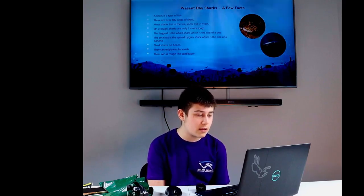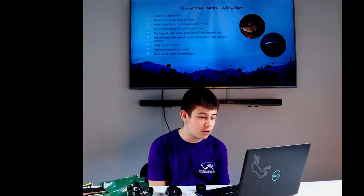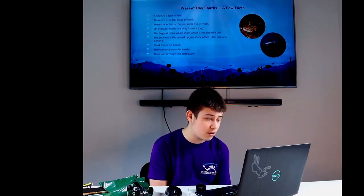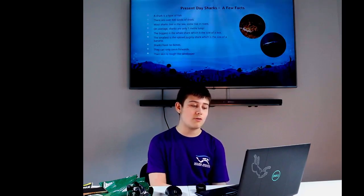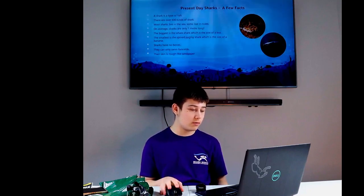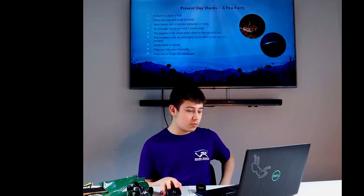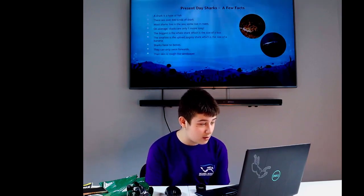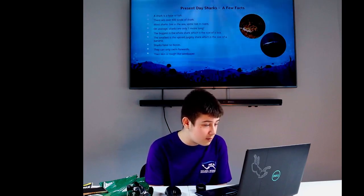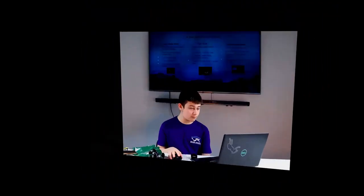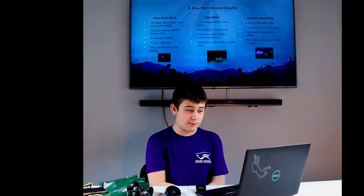Present day sharks, a few facts: A shark is a type of fish. There are over 400 kinds of sharks. Most sharks live in the sea, some live in rivers. On average sharks are only one meter long. The biggest is the whale shark which is the size of a school bus. The smallest is the spined pygmy shark which is the size of a banana. Sharks have no bones, the skeleton is cartilage. They can only see forward. Their skin is rough like sandpaper.